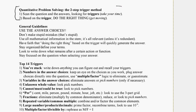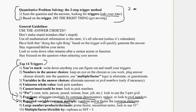So this is from your manual: quantitative problem solving, the two-step trigger method. Going all the way down to the top 14 triggers — we talked about number 7 and number 8. Given fractions, you want to eliminate them by multiplying by a common denominator, reduce them, or look to pick numbers. Given a repeated variable or a common multiple, that's a trigger to combine and/or factor the common elements — because the GMAT wants you to do that. You have a full two minutes to do the question, and it should take about 60 seconds to execute, leaving 60 seconds to think about the question.